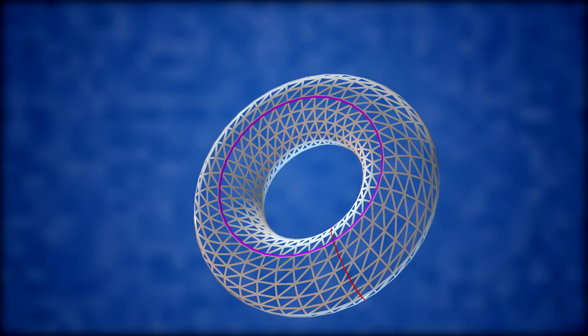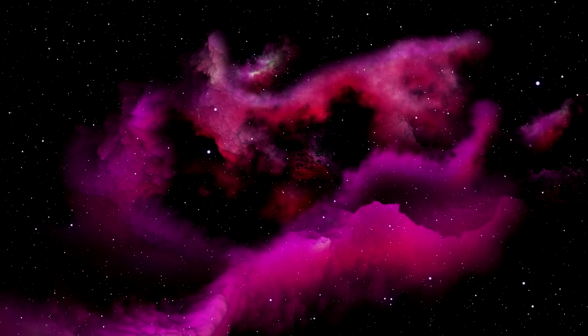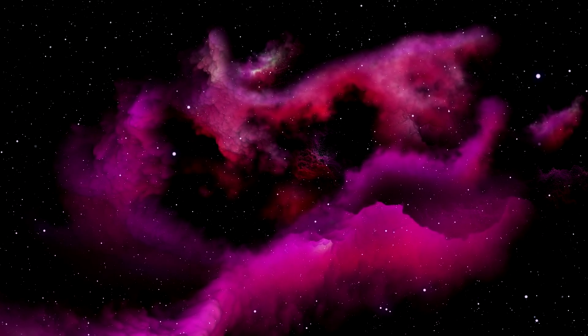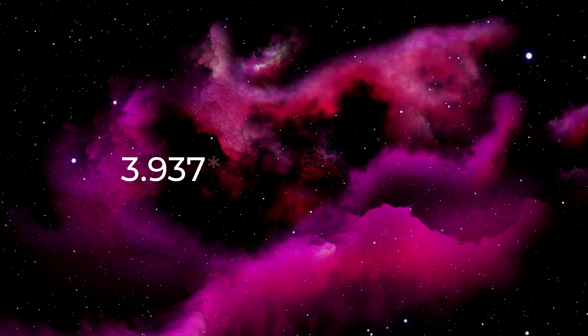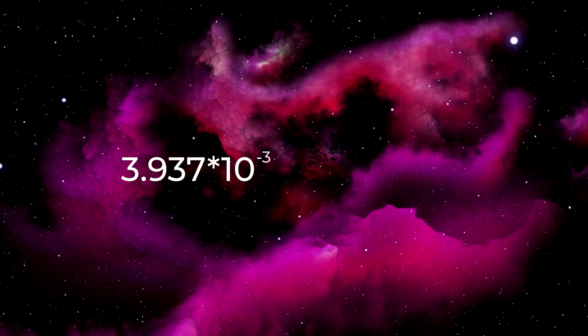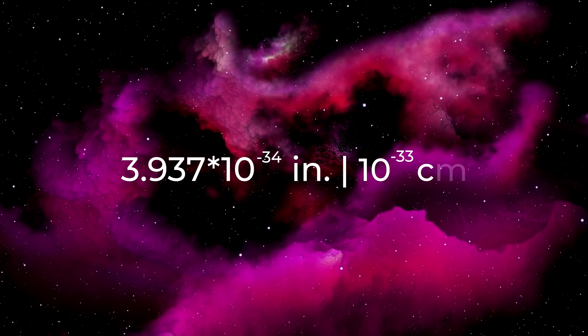First, the torus shrinks its donut shape down smaller and then into a zero-dimensional point. When additional measurements are collapsed to a single point, their size is no more than 3.937 times 10 to the minus 34 inches or 10 to the minus 33 centimeters.